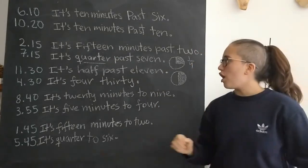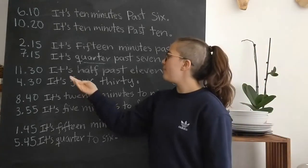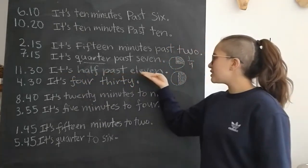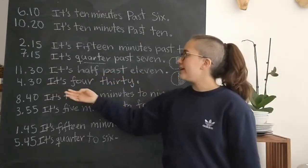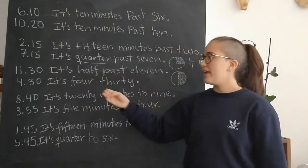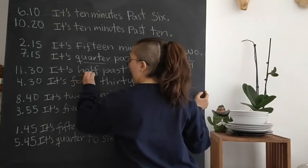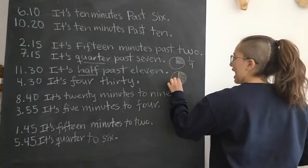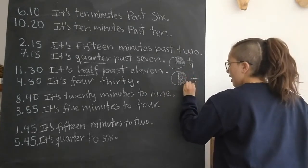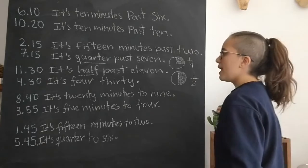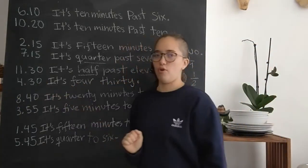Now for eleven thirty or four thirty, there are also two ways. We can say it's half past eleven, or it's four thirty. Now half, half means it is half the clock. Okay, so it is one half. And it's four thirty, it's just that it's thirty minutes after four.